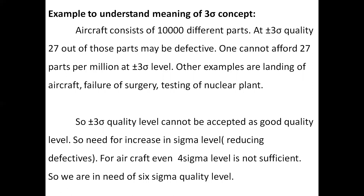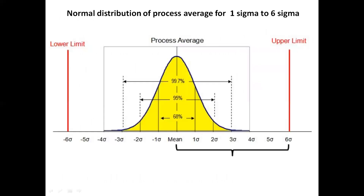At 3.4 DPMO, plus or minus 3 sigma is not acceptable as a good quality level, so companies are looking for the next level. For example, reducing variation using a normal distribution: on the left side is the lower limit and on the right side is the upper limit, with the process average in the middle.